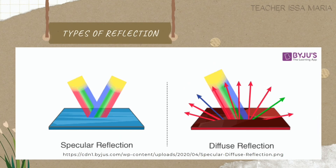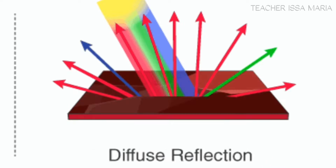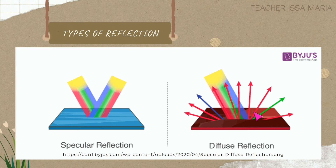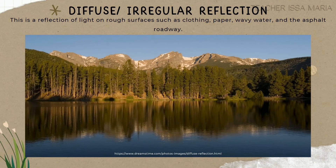We have the types of reflection of light. We have specular, also known as regular reflection, and diffuse reflection, also known as irregular reflection. In specular reflection, the reflection is clean and equal — a perfect reflection. In diffuse reflection, the light is scattered in different directions. An example of specular reflection produces a clear copy-paste image, while diffuse reflection produces a blurry image.